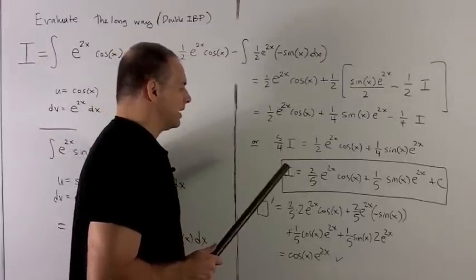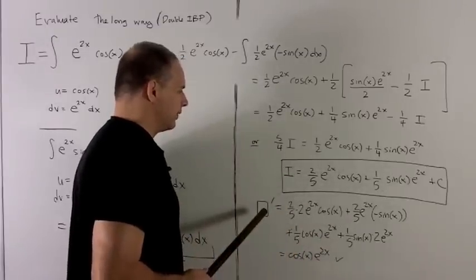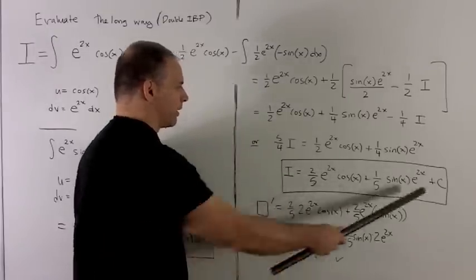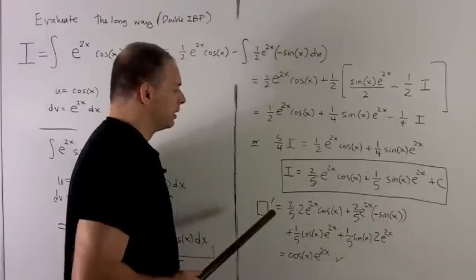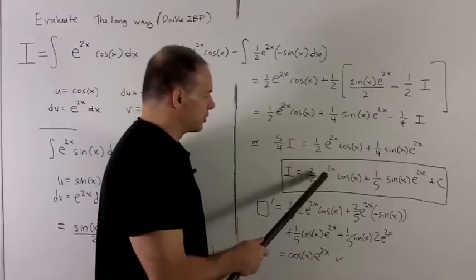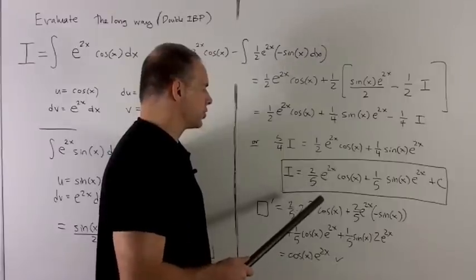Okay, let's check it. So the idea is we're going to take the derivative of this, and then we'll see if we get our original integrand back. So I'm going to take whatever's in the box, take its derivative. So let's see what we get. We have our 2 fifths. Derivative of this is going to be, take the derivative down, gives me a 2, and then just leave the answer as is. So I have 2 e to the 2x cosine x.